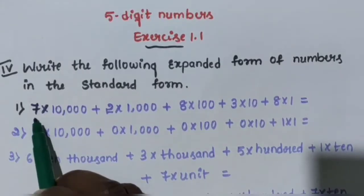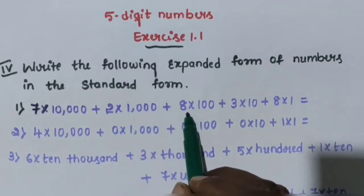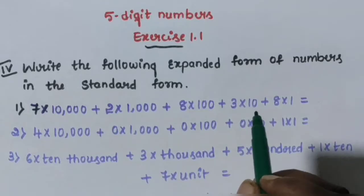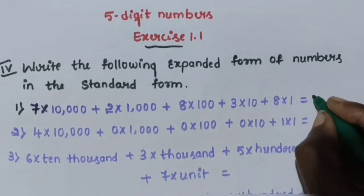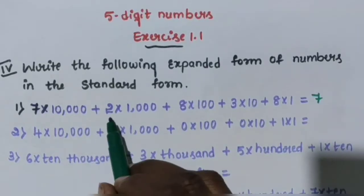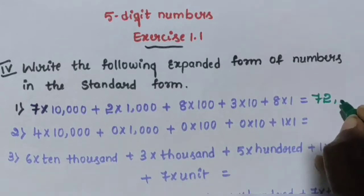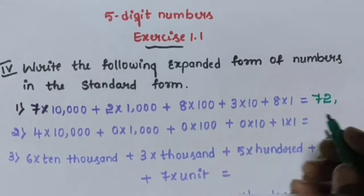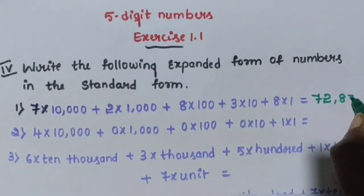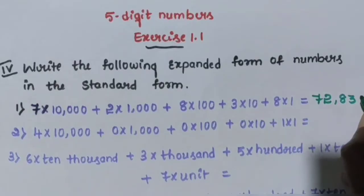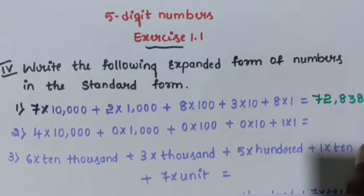Question number 1: 7 into 10,000 plus 2 into 1,000 plus 8 into 100 plus 3 into 10 plus 8 into 1. So 7 is in the 10,000 place, 2 is in the 1,000 place, 8 is in the 100 place, 3 is in the 10s place, and 8 is in the units place. The answer is 72,838.